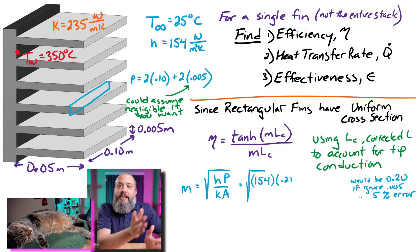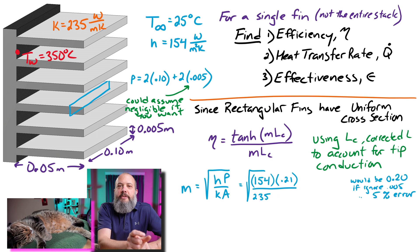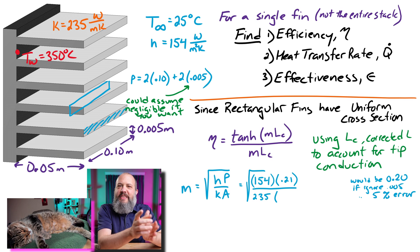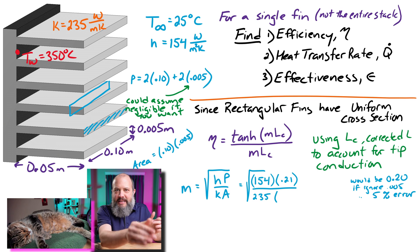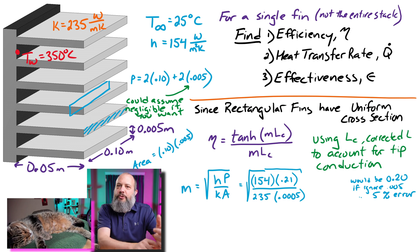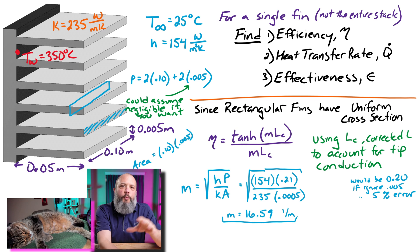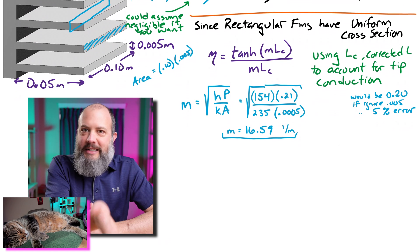K is the thermal conductivity that was given, 235. And I can calculate the cross-sectional area. The fin parameter Serenity's M, this A that's in the denominator is the cross-sectional area. So this is my width times the thickness, and I get 0.005 meters. Multiply together, big square root, Serenity's M ends up being 16.5. That's the fin parameter M. And the units for that are 1 over meters. It's 1 over length.